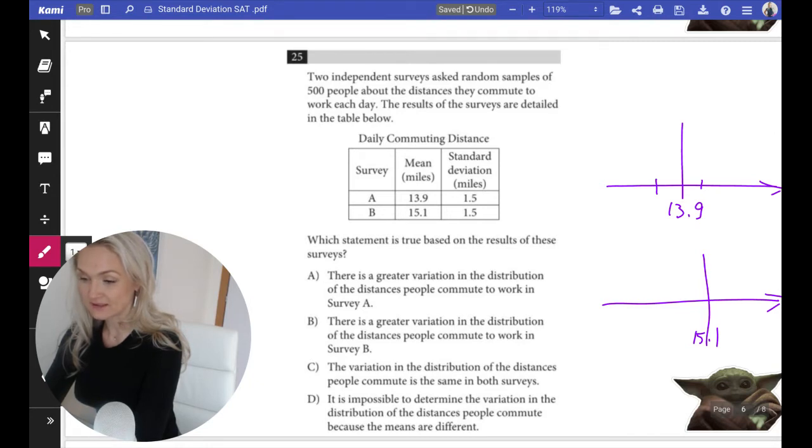So right here we're going to have 12.4—subtracting 1.5—and adding 1.5 gives us 15.3. This is one standard deviation where 68 percent of data will lie, and it's going to be like a regular bell curve. Similarly, here we're going to work on the other distribution.